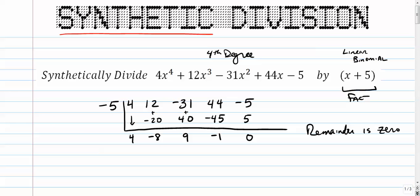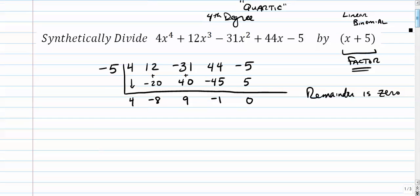That means that this is actually a factor. That's actually a factor of the fourth degree polynomial. I think a fourth degree polynomial is called a quartic. I think you have quadratics, cubics, and then quartics. That's kind of a little side note there, a little trivia.